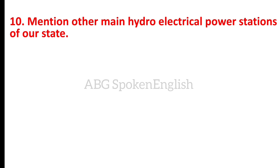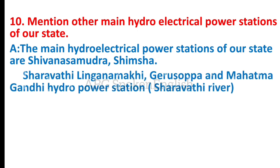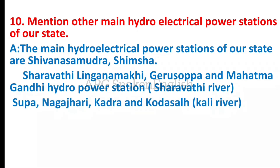Mention the other main hydroelectrical power stations of Karnataka state. The main hydroelectrical power stations are Shivansamudra, Shimsha, Sharawati, Linganamakki, Gerusoppa, and Mahatma Gandhi Hydro Power Station, as well as Supa and Nagjhari.